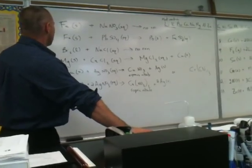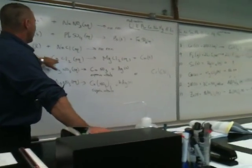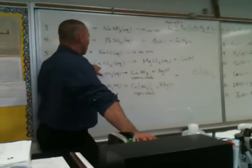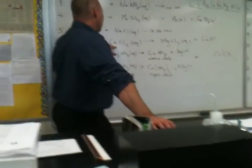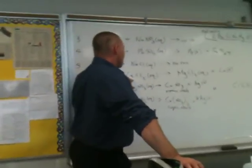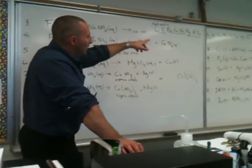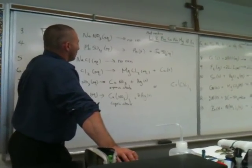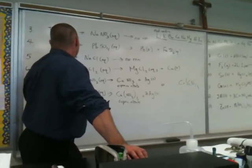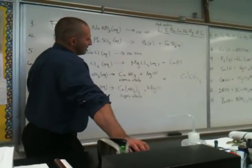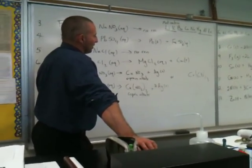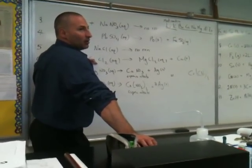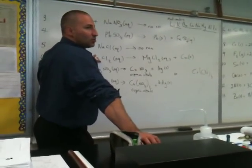In the next example, we have magnesium reacting with cupric chloride, that is copper(II) chloride. In this case, magnesium is higher than copper, so you do get a reaction. The balancing of the equation is very easy because both magnesium and copper are plus-2 cations.